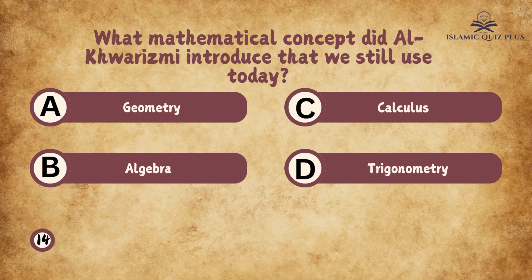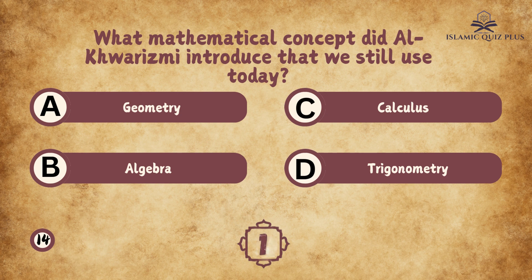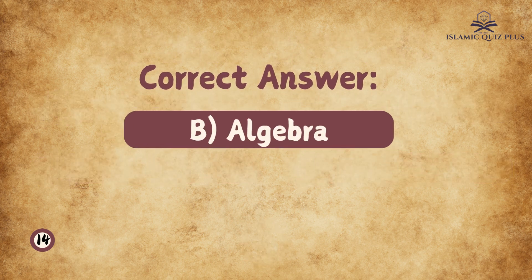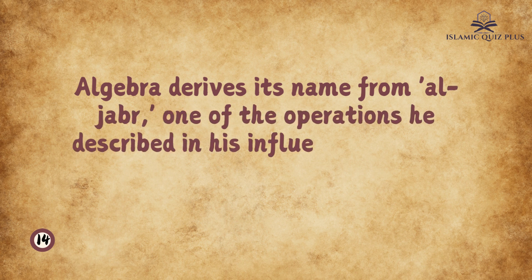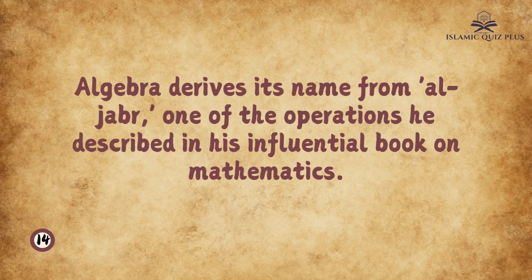Question 14: What mathematical concept did Al-Khwarizmi introduce that we still use today? A. Geometry, B. Algebra, C. Calculus, D. Trigonometry. The correct answer is B. Algebra. Algebra derives its name from Al-Jabr, one of the operations he described in his influential book on mathematics.